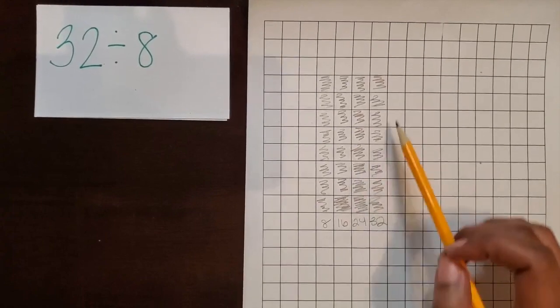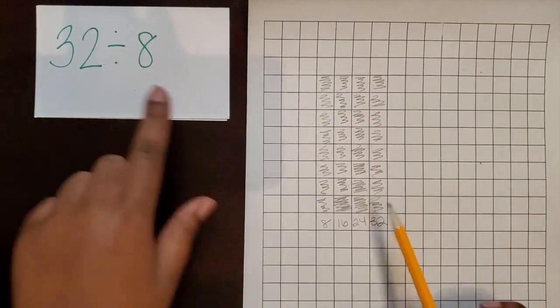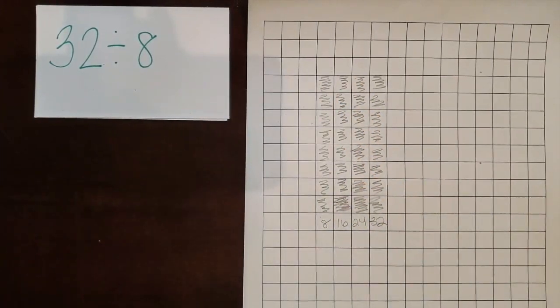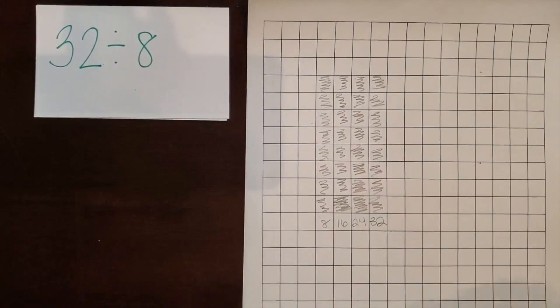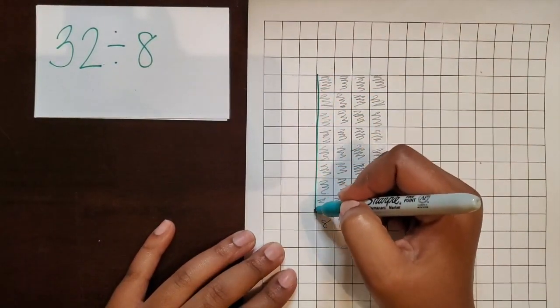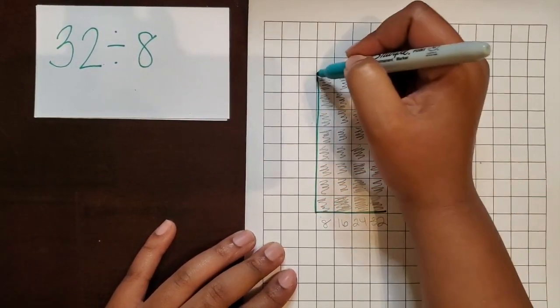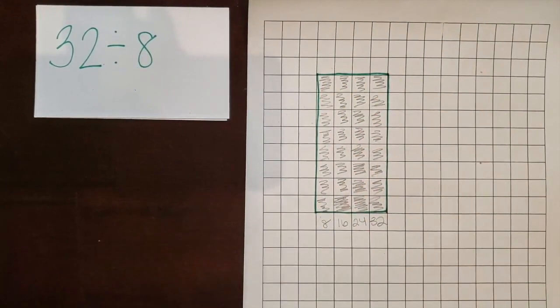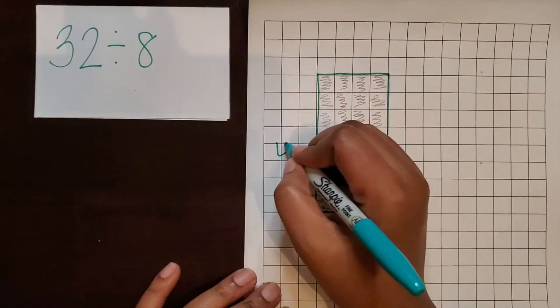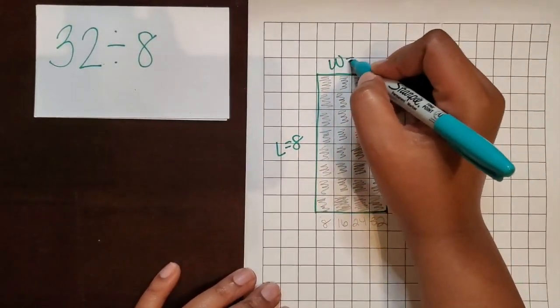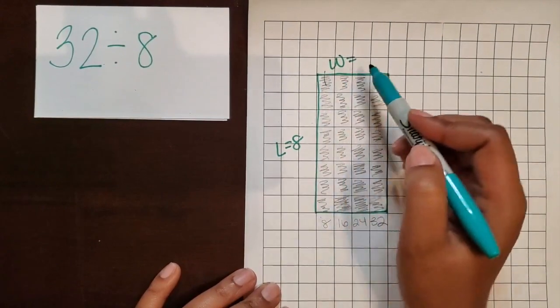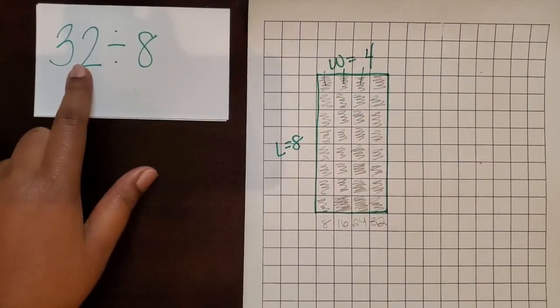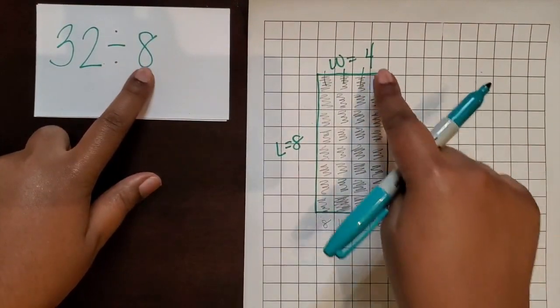Okay, so we have 32 total square units. We have 8 square units in each column. So I'm going to outline the rectangle to find out how many columns we have to represent our width. So we had a length of 8. Our width is 1, 2, 3, 4 full columns. So 32 divided by 8 equals 4.